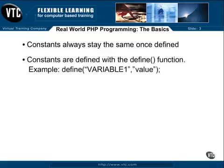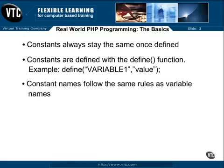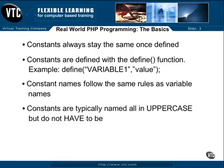A constant is defined using the define function. You simply type define, followed by a round bracket, then a double quote, and what you want to name the constant. Constant names follow the same rules as variables do. After the name, another double quote, then a comma, then the value of that constant in double quotes. You end the function call with a closing round bracket and, of course, a semicolon. Typically, when choosing a name for a constant, you should use uppercase characters to distinguish between constants and variables in your scripts.